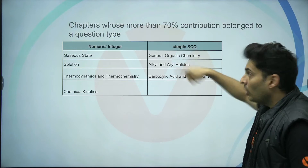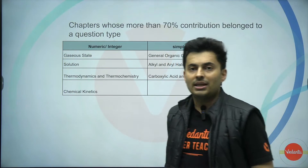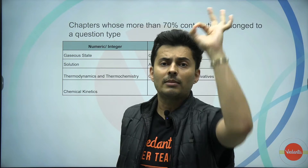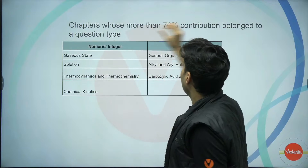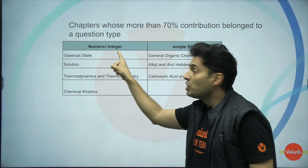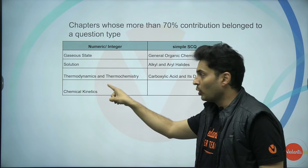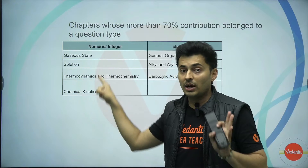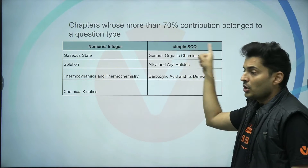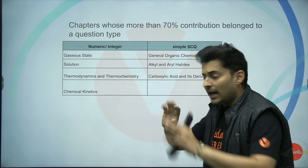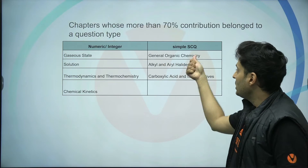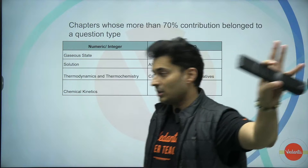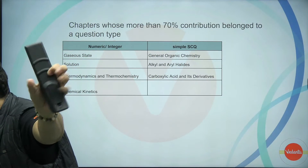Now, chapters whose weightage is more than 70% in a particular question type — meaning they consistently appear in that format: for numeric type, gaseous state, solutions, thermodynamics and thermochemistry, and chemical kinetics are the top contributors, together accounting for more than 70% of numeric-type chemistry questions. For single correct questions, GOC (general organic chemistry), alkyl and aryl halides, and carboxylic acids and their derivatives are the highest contributors in chemistry. These are the easy marks — target them clearly.